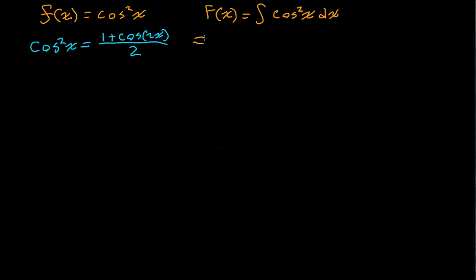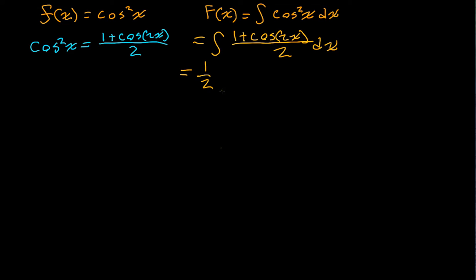We're going to have our antiderivative equal to the integral of 1 plus the cosine of 2x divided by 2 with respect to x. We can simplify this a little bit — we can pull out 1 half. That's going to be equal to 1 half times the integral of 1 plus the cosine of 2x with respect to x.